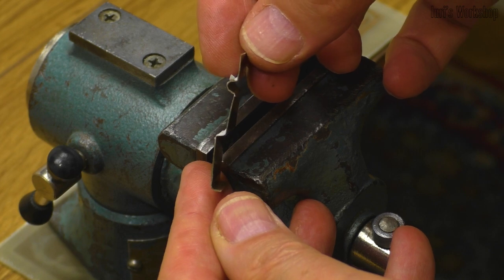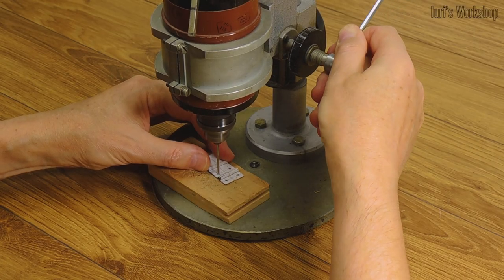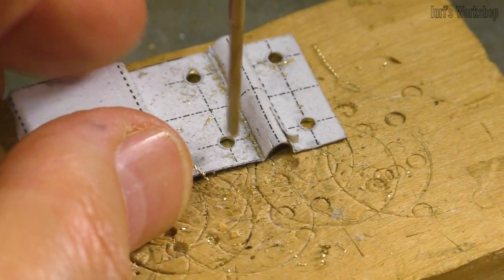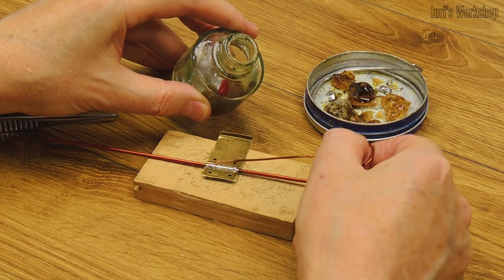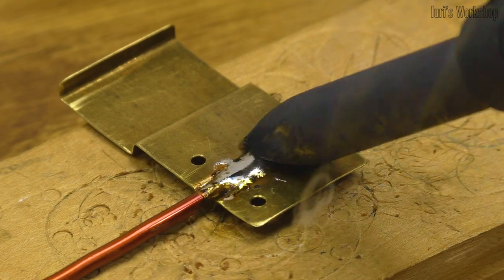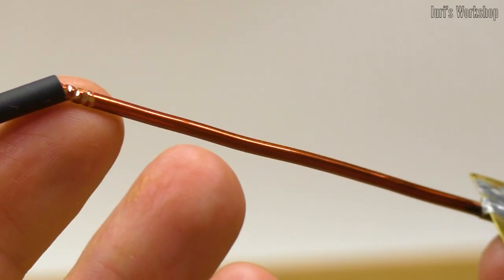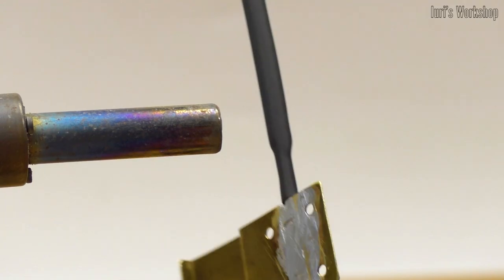It is better to drill holes after bending, so that in case of an error, it is possible to introduce a correction. Of course, both soldered parts should first be carefully covered with solder. And this heat shrink tube serves mainly for decorative purposes.